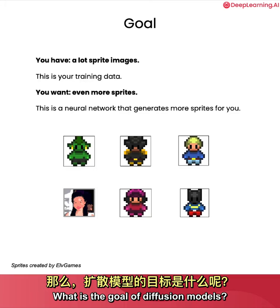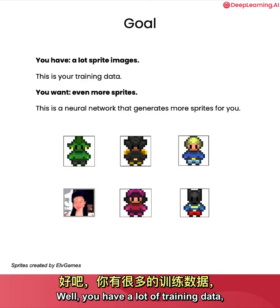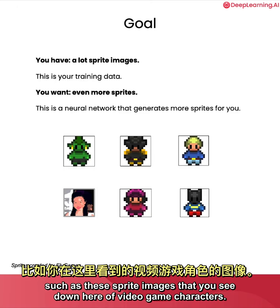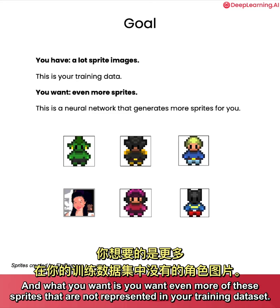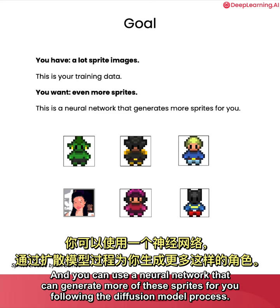What is the goal of diffusion models? Well you have a lot of training data such as these sprite images that you see down here of video game characters, and this is your training data set. What you want is even more of these sprites that are not represented in your training data set, and you can use a neural network that can generate more of these sprites for you following the diffusion model process.